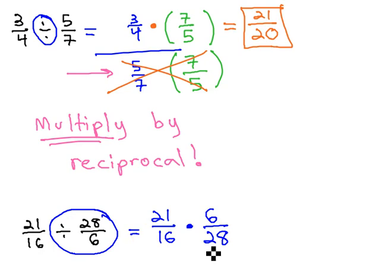On the first diagonal, 21 and 28, we'll notice are both divisible by 7. 21 divided by 7 is 3, and 28 divided by 7 is 4. 6 and 16 on that diagonal also have a common factor of 2. 6 divided by 2 is 3, and 16 divided by 2 is 8.